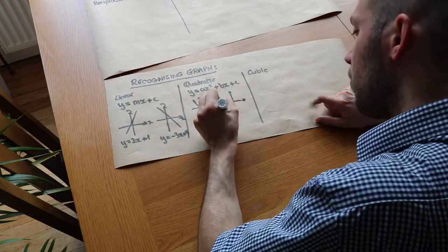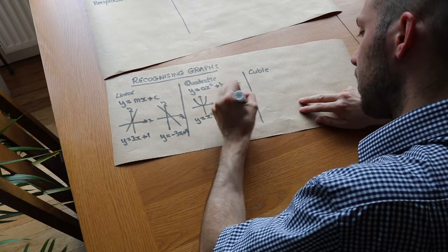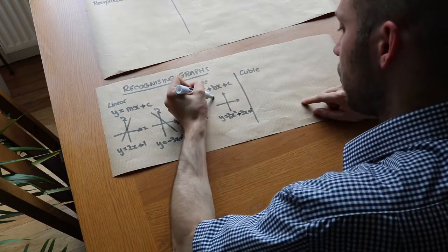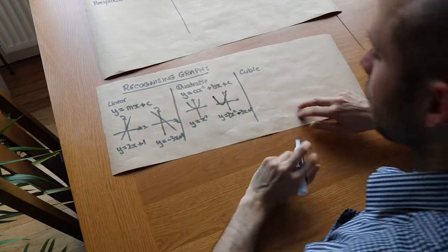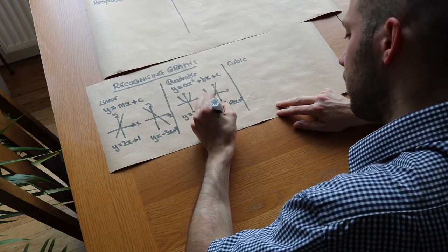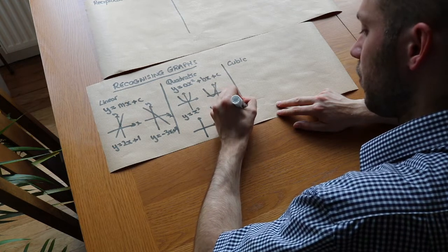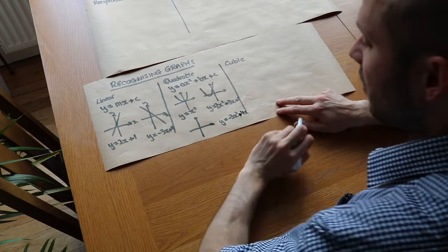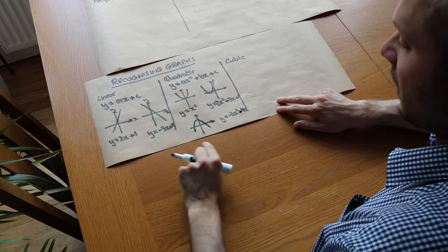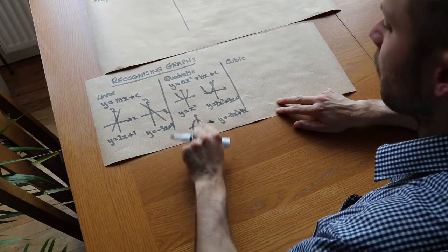For another example, y equals 2x squared plus 3x plus 1 — it's a positive number in front of the x squared, so it's still going to have a smiley face shape. Finally, if the number in front of x squared is negative, for example y equals minus 3x squared plus 4x, then it's going to have a sad face shape — upside down, a frowny face shape.